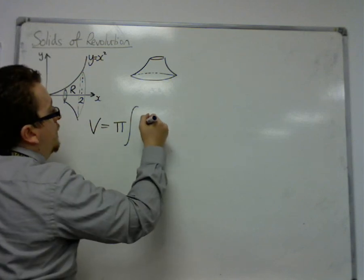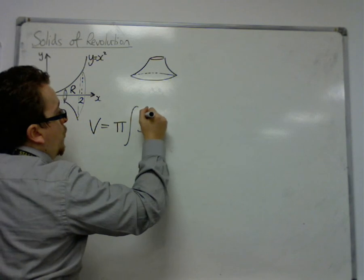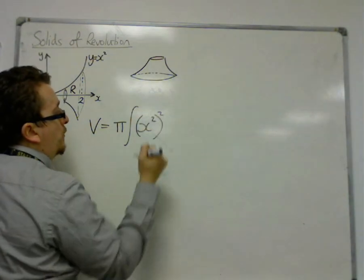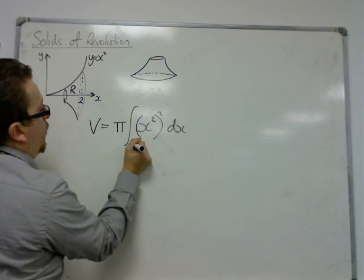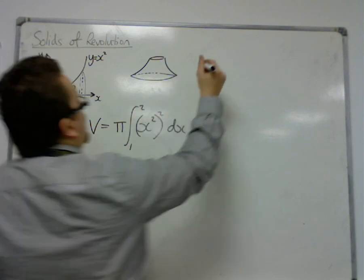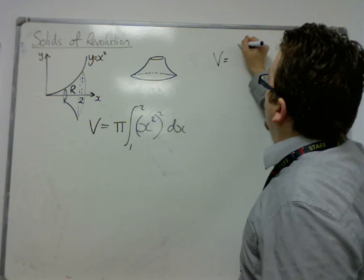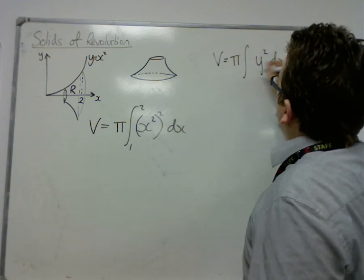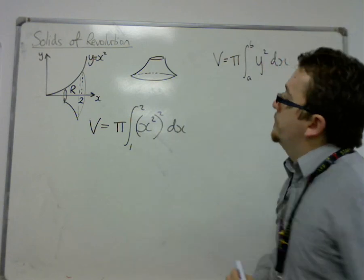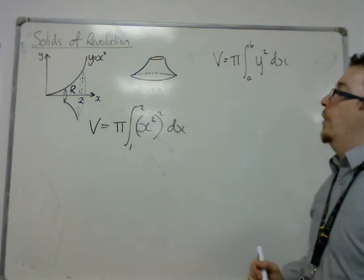So, this is between 1 and 2. This is coming from the volume being π∫y² dx between a and b, on the x-axis.